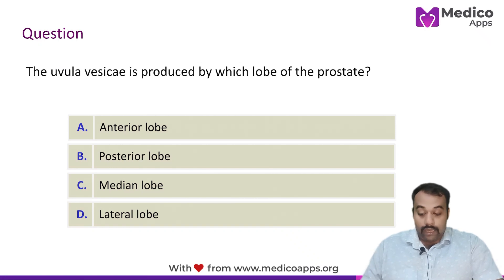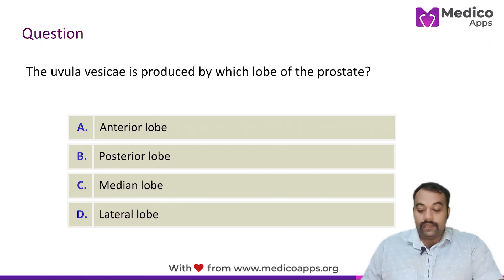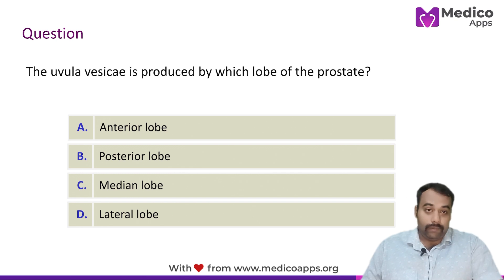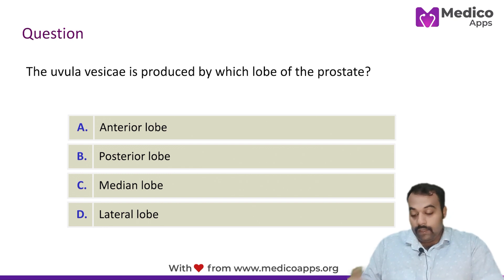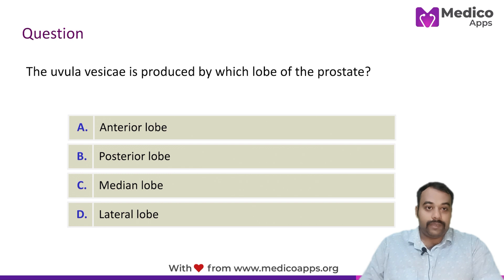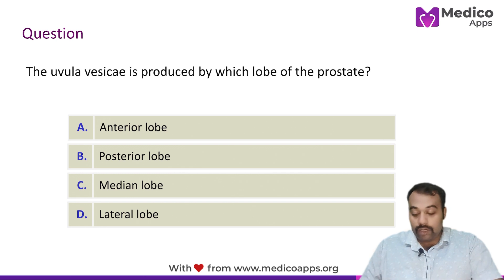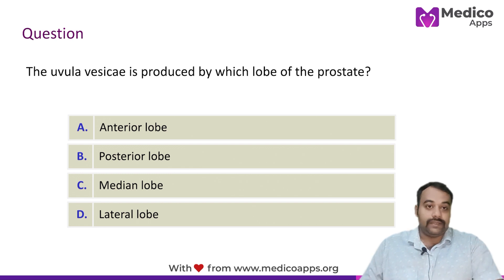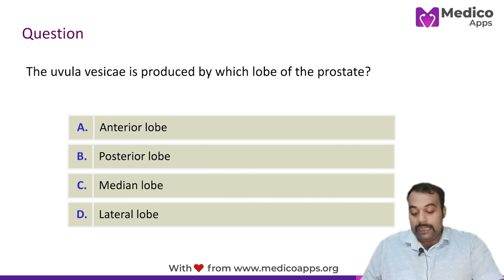The question is: the uvula vesicae is produced by which lobe of the prostate? Option A is the anterior lobe, option B is the posterior lobe, option C is the median lobe, and option D is the lateral lobe.